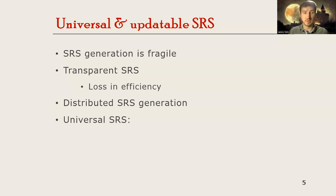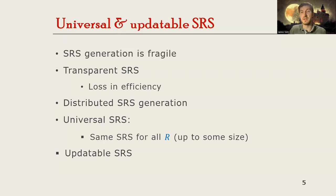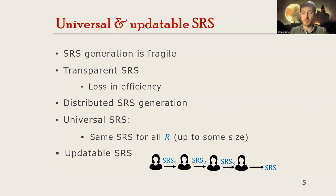There are two good notions here. One is a universal SRS, which means the same SRS can be used for all relations up to some size, so we can generate the SRS once and use it again and again. Secondly, we have updateability: a very nice SRS generation protocol where the first party generates the SRS, everyone else can verify this, and then subsequent parties can each update it, until we get the final SRS. This can be securely used as long as one of the parties was honest.